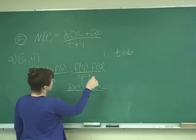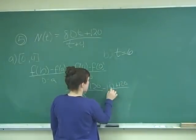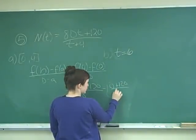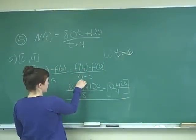Minus F of 0 is going to be 0 plus 120 all over 0 plus 4, which is just 4. So all of this is going to be 4, and all of this is divided by 4.